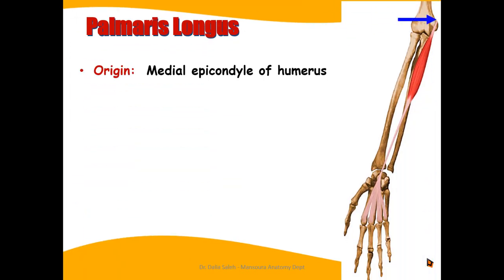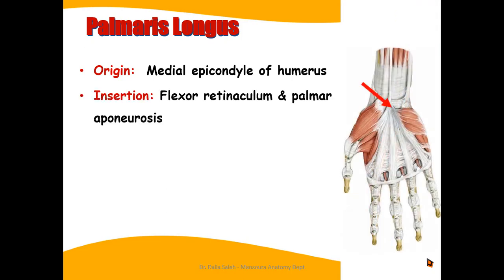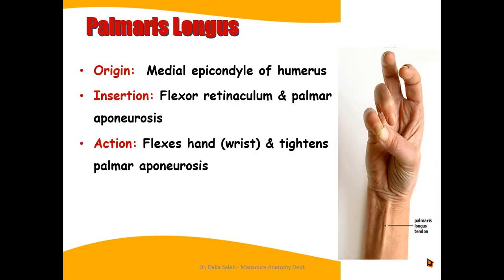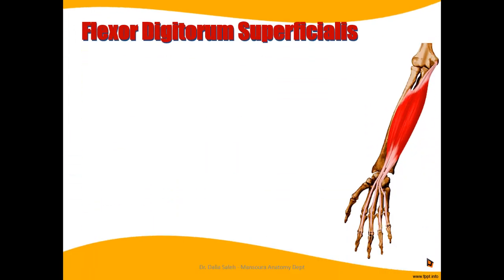The palmaris longus originates from the medial epicondyle of the humerus from the common flexor origin. It inserts into the flexor retinaculum and the palmar aponeurosis, so it does not have a bony attachment. When it contracts, it flexes the hand, or assists in flexion of the hand. It is a weak flexor of the hand and also tightens the palmar aponeurosis, as when you are making a fist or a grip.